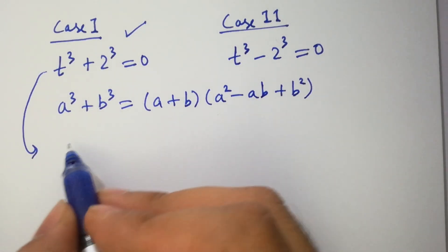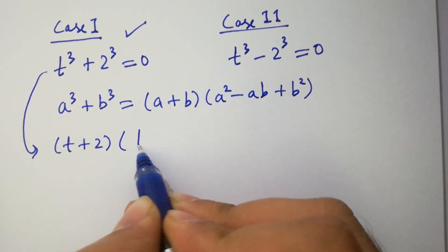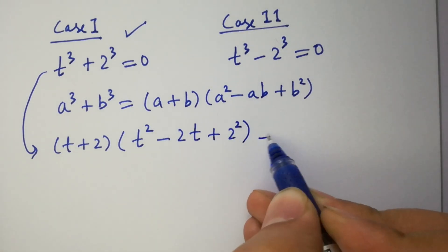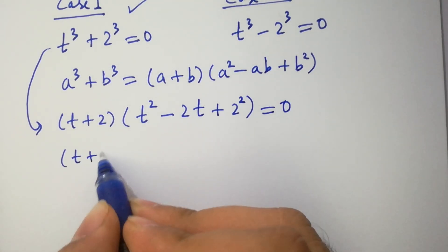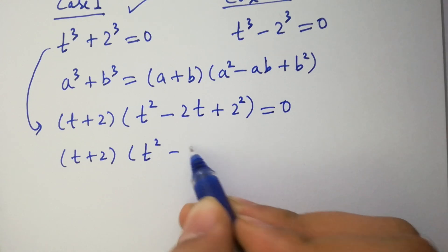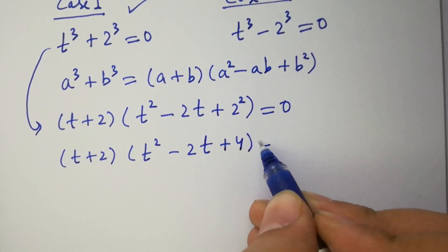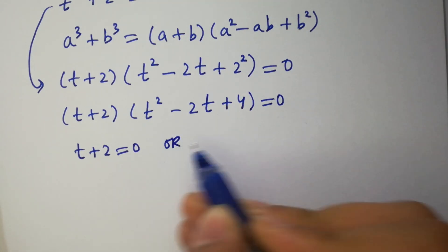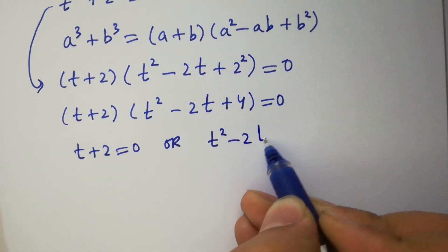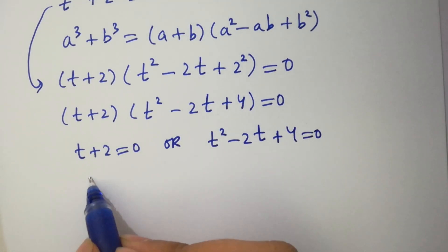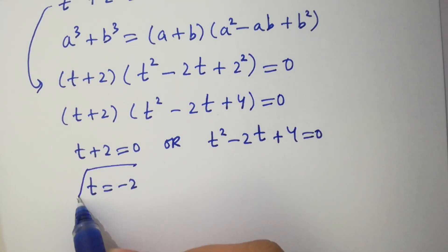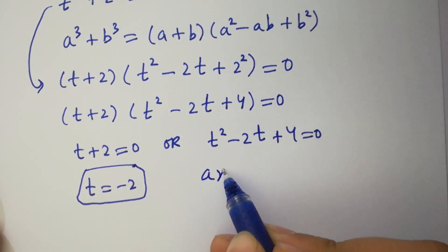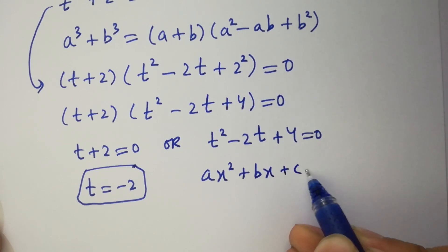It will be t plus 2, times t squared minus 2t plus 4, equal to 0. Either t plus 2 equals 0, or t squared minus 2t plus 4 equals 0. So t equals minus 2. This is our first real root solution. And here we have a quadratic equation of the form a squared plus bx plus c equals 0.